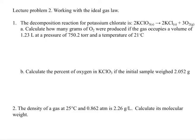Okay, so let's take a look. This is lecture problem two, and we're just going to be doing the first one at this point. The decomposition reaction for potassium chlorate is 2KClO3 goes to 2KCl plus 3O2. Calculate how many grams of O2 were produced if the gas occupies a volume of 1.23 liters at a pressure of 750.2 torr and a temperature of 21 degrees Celsius. Now the reason why we're calculating the grams of O2 is because you'll see calculate the percent of oxygen in KClO3 if the initial sample weighed 2.052 grams.